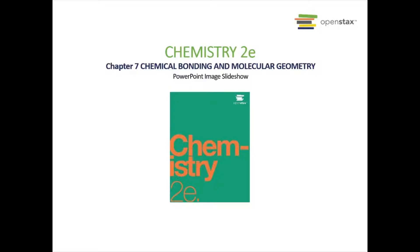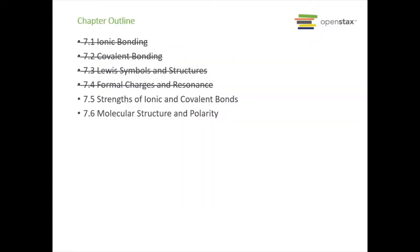Hello everyone, welcome to week 10. We are picking up with the second half of chapter 7, Chemical Bonding and Molecular Geometry. Last week we went over ionic and covalent bonding, Lewis structures, and formal charges and resonance. This week we are going to build upon those sections and talk about the strengths of ionic and covalent bonds and molecular structure and polarity.